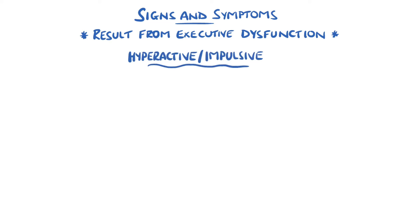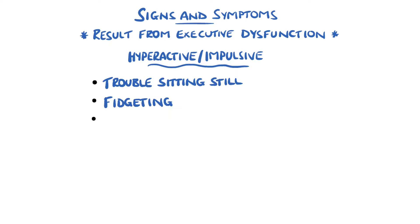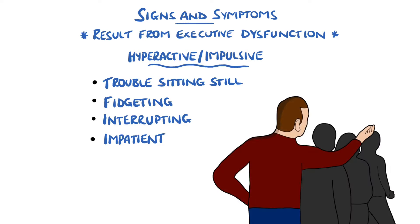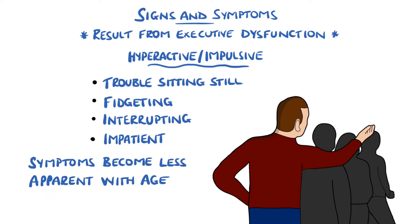The hyperactive-impulsive features include trouble sitting still, fidgeting, talking constantly, including interrupting others, or even being unable to wait turns such as in a line. As patients get older, the symptoms become less evident.